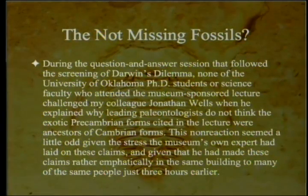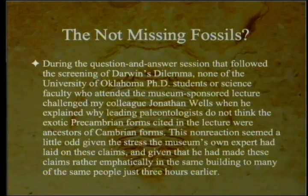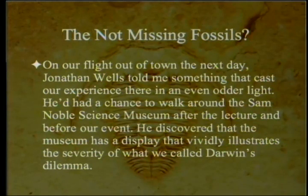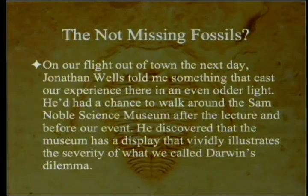This non-reaction seemed odd given the stress the museum's own expert had laid on those claims — he had made them rather emphatically in the same building to many of the same people just three hours earlier. On their flight out of town the next day, Jonathan Wells told Meyer something that cast the experience in an even odder light. Wells had walked around the Sam Noble Science Museum after the lecture — with claims about intermediate forms ringing in his ears — and discovered that the museum had a display that vividly illustrates the severity of what they call Darwin's Dilemma, and didn't talk about all those intermediate animals.